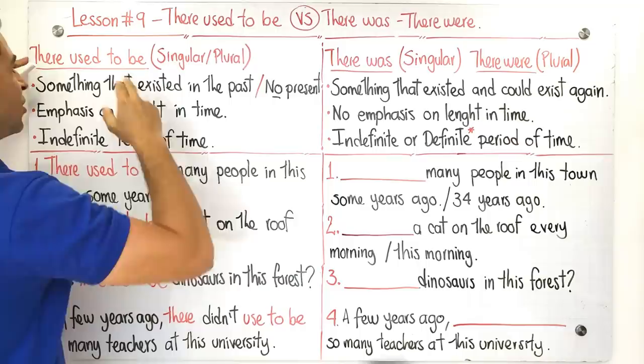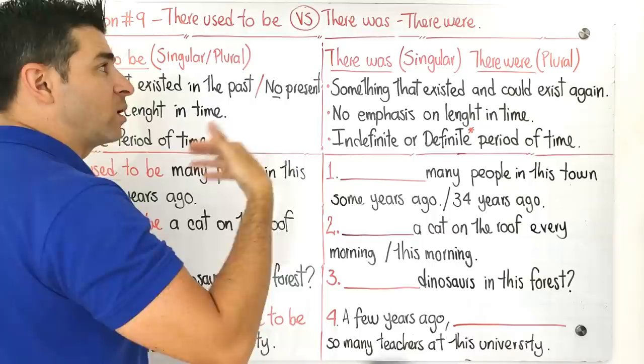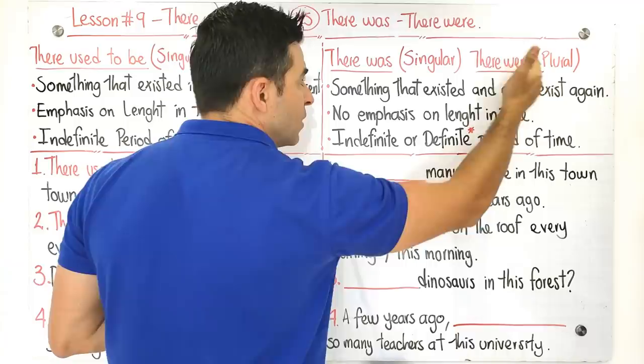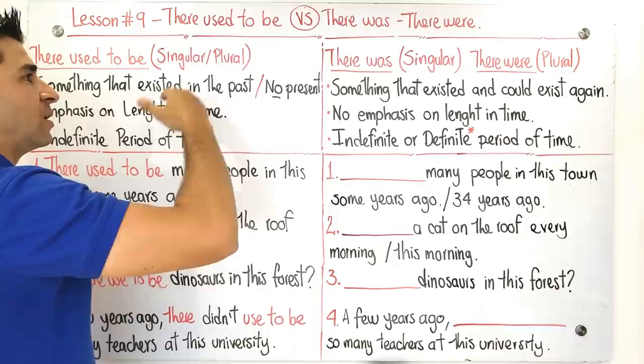Now guys, there used to be is going to be used when we have a subject in singular or plural, and when we're talking about there was and there were it's going to be different. Why? Because if you have the subject in singular, you have to use there was, and if you have a subject in plural, you have to use there were.